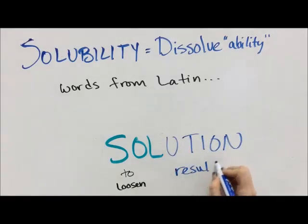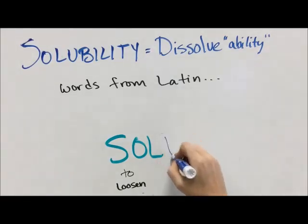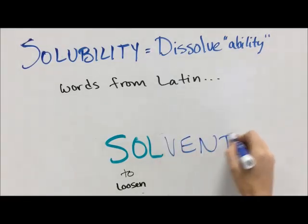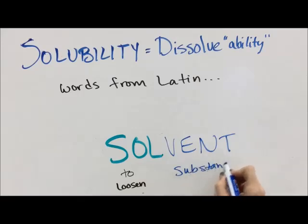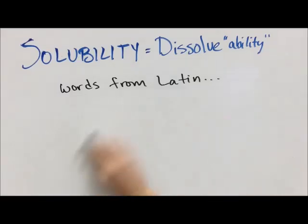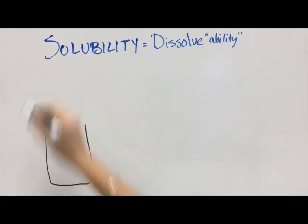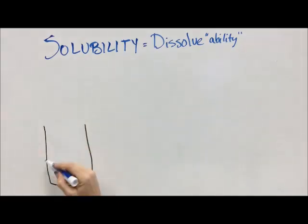A solution is the substance that is the result of the loosening of particles. And a solvent is a substance that can loosen the particles of another substance. It's all about loosening — taking particles that are crunched together and helping them to spread apart.